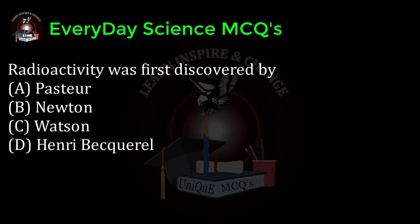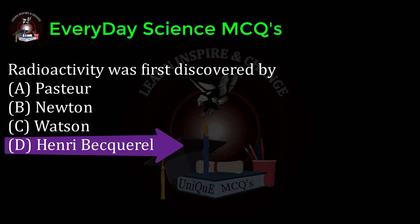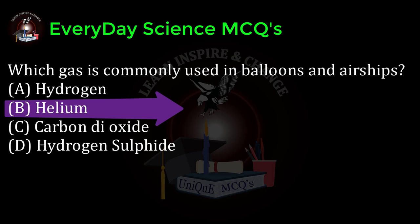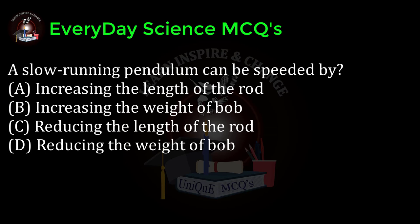Which gas is commonly used in balloons and airships? a) hydrogen, b) helium, c) carbon dioxide, d) hydrogen sulfide. Correct answer: b.